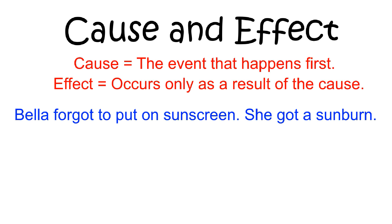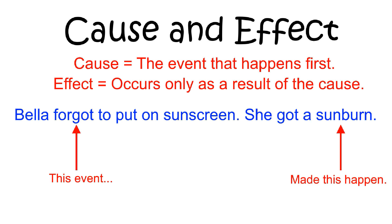In this first example, Bella got a sunburn. The event that led to her getting the sunburn was that she forgot to put on sunscreen, so that is the cause. Getting the sunburn is considered the effect because it happened only as a result of the first event. The fact that Bella forgot to put on sunscreen caused her to get a sunburn.